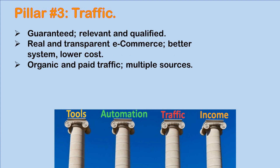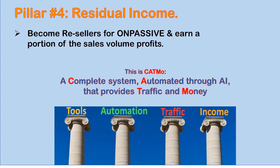This system is completely automated with all the tools and features. The third pillar is Traffic — we're talking about guaranteed, relevant, and qualified traffic. It's real and transparent e-commerce, a better system at lower costs. We have organic and paid traffic from multiple sources. The fourth pillar is Income — the 'MO' in CATMO — that's money available to us because we become resellers for OnPassive and earn a portion of the sales volume profits. Mr. Mufara has said unequivocally that OnPassive is not greedy when it comes to profit.